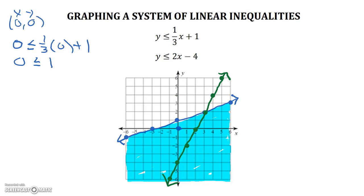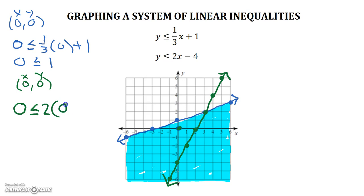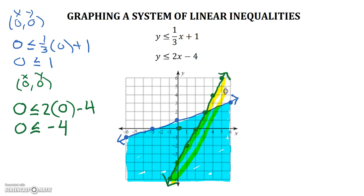So our next step is to test my favorite point, the origin. We're going to plug in 0 for x and y in our second inequality. So 0 is less than or equal to 2 times 0 minus 4. Zero is less than or equal to negative 4. This is a false statement. So looking at our line, we're going to shade the region that does not include the 0, 0, because 0, 0 was not a solution to this second inequality. So we're shading the region without the 0, 0.